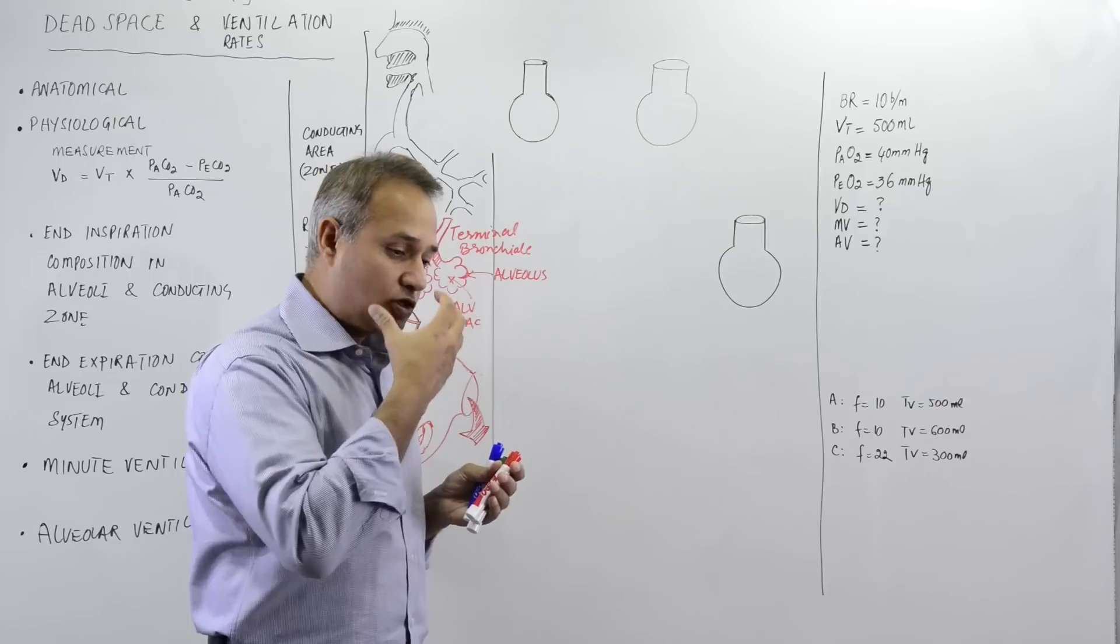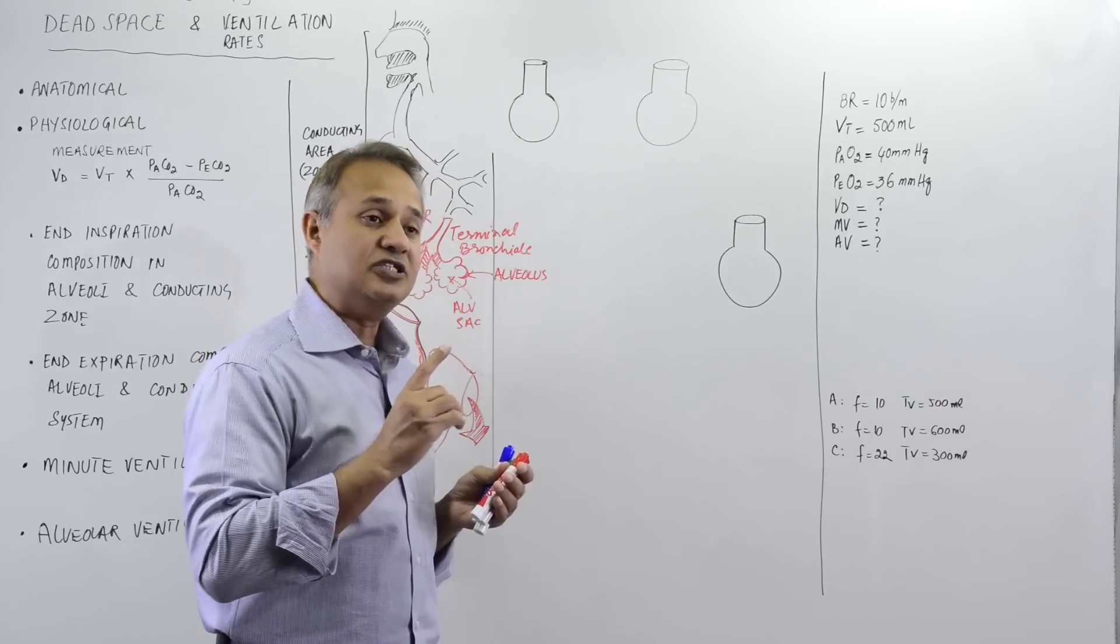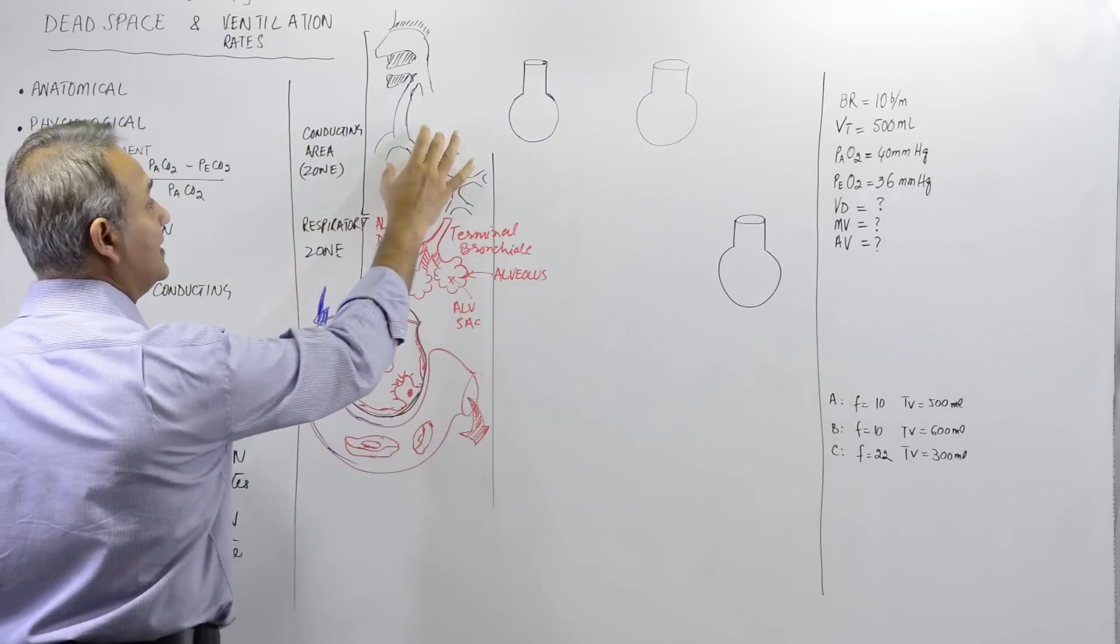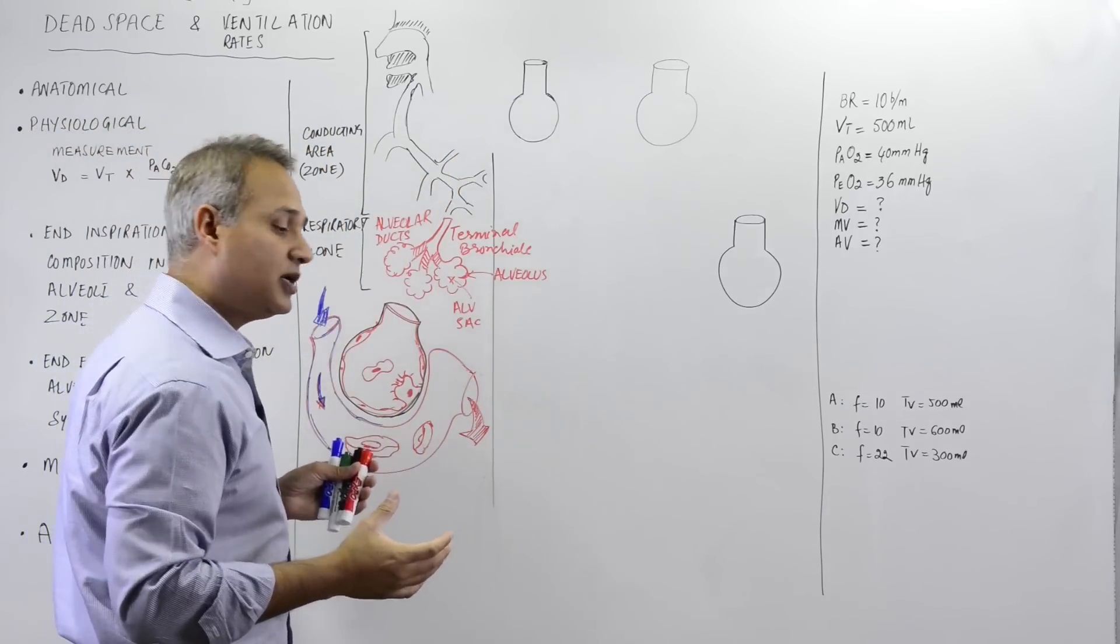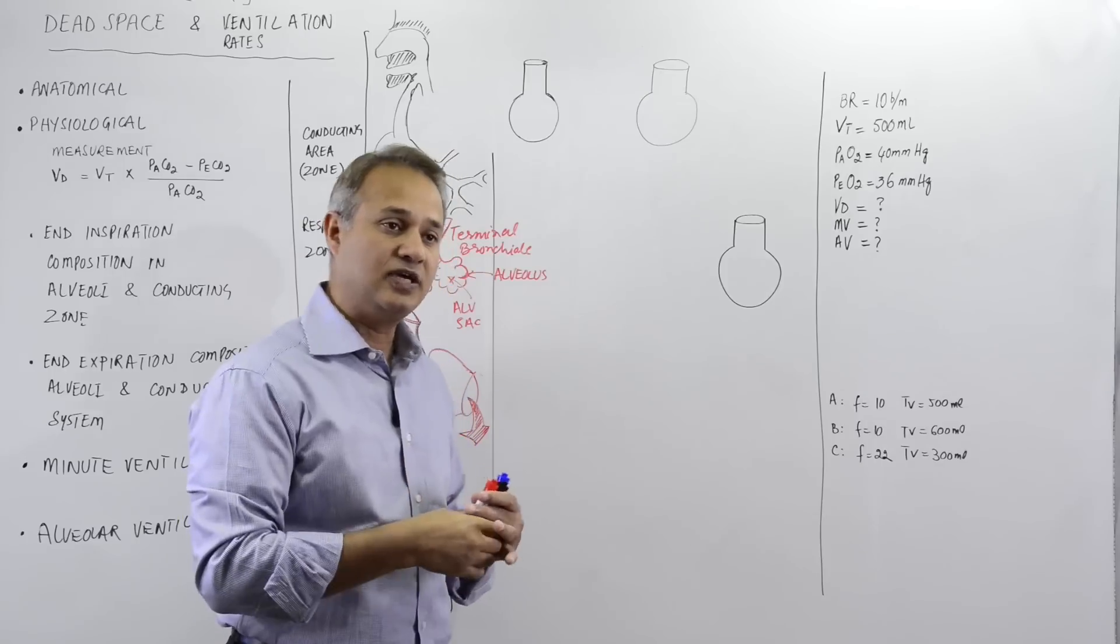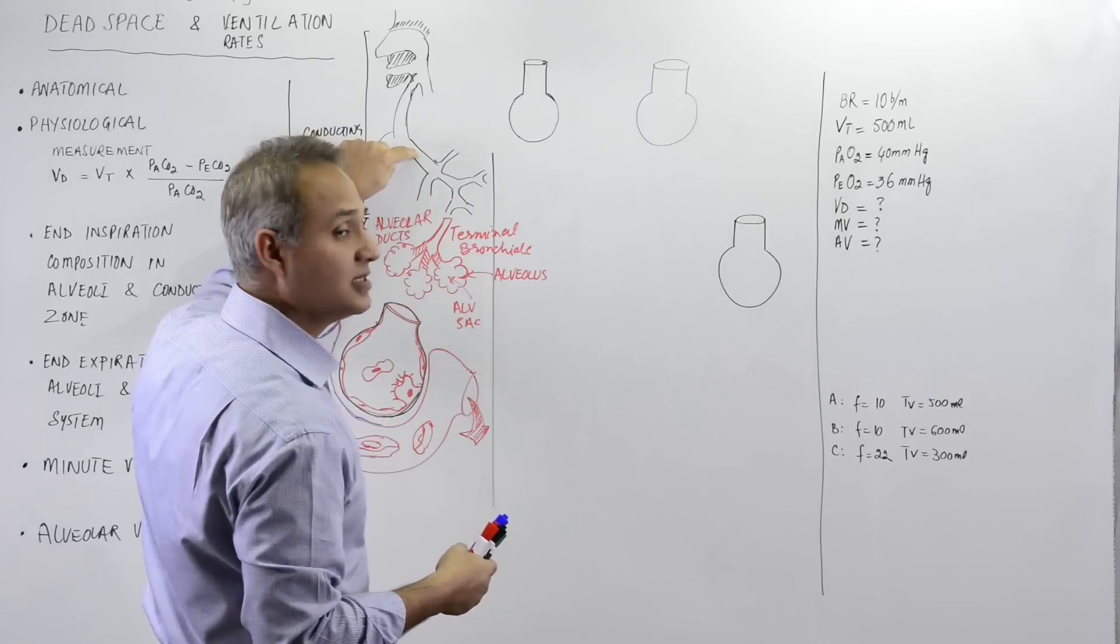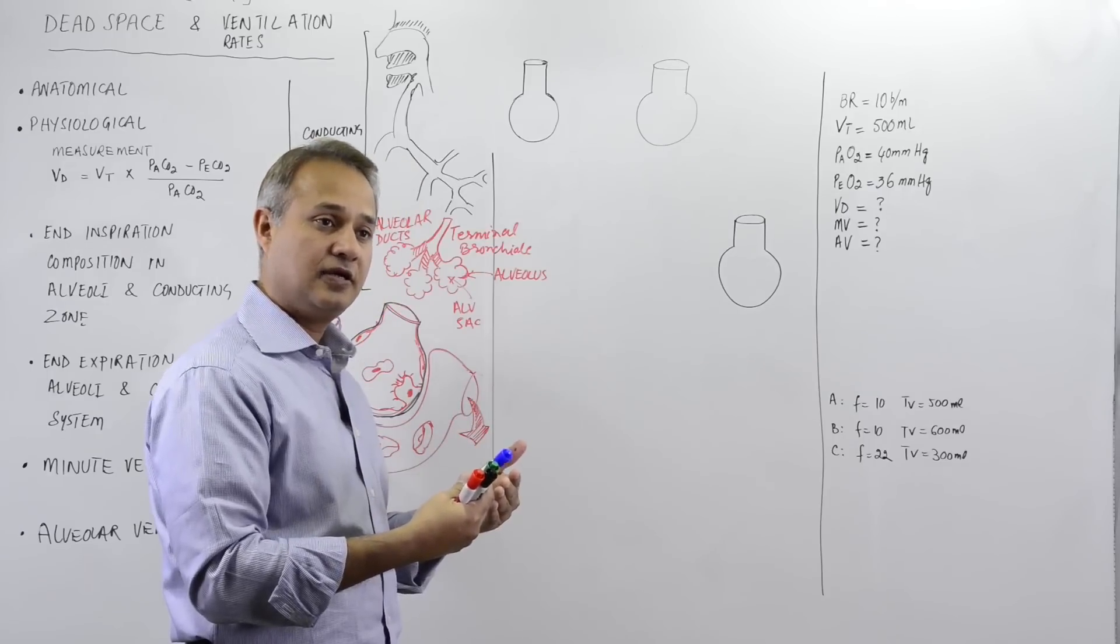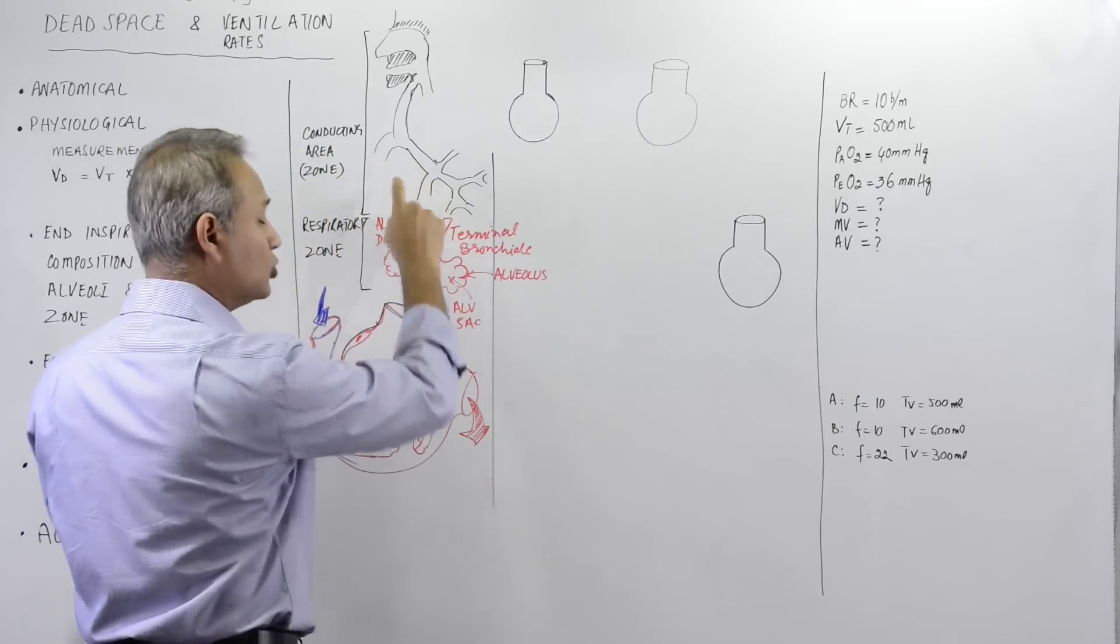The anatomical area where gaseous exchange does not happen is called anatomical dead space. And what does a dead space mean? Dead space means that air is present to have the exchange happen. Blood is present there as well.